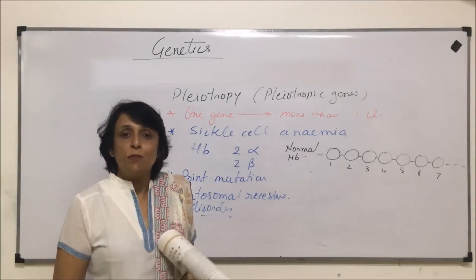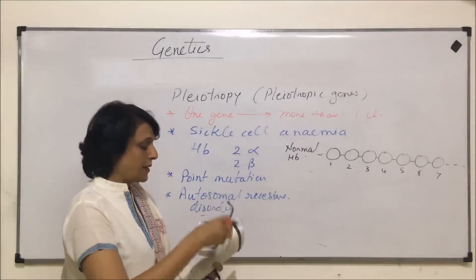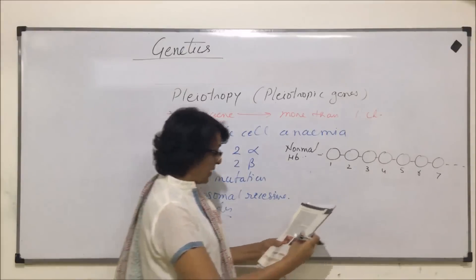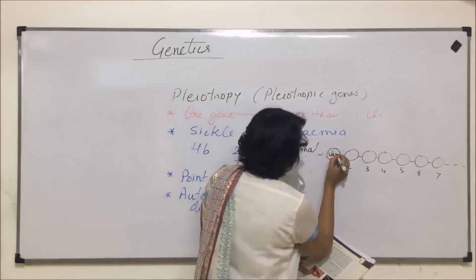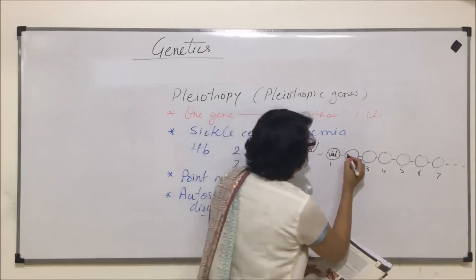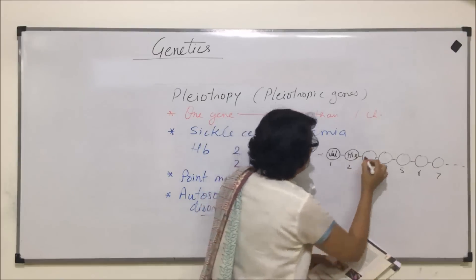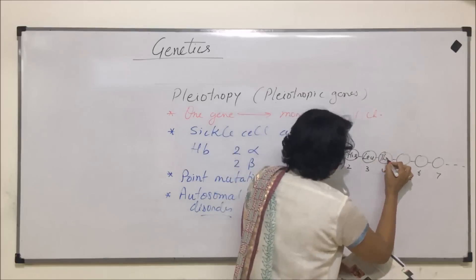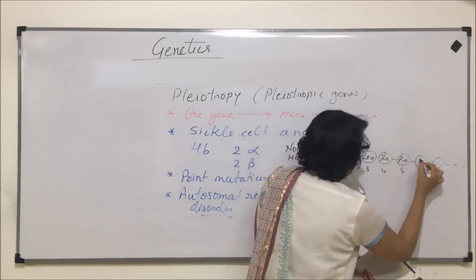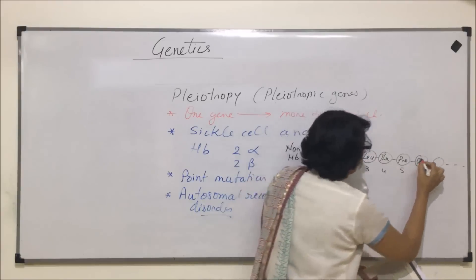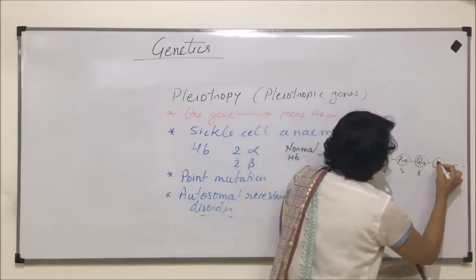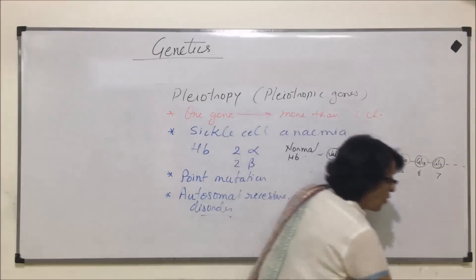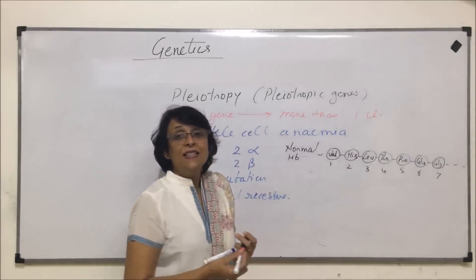In the normal hemoglobin, the amino acids present at these positions are: position 1 — valine, position 2 — histidine, position 3 — leucine, position 4 — threonine, position 5 — proline, position 6 — glutamic acid, and position 7 — glutamic acid. Our focus is on position number 6.